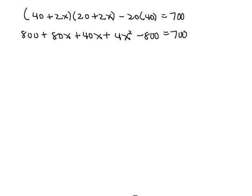Now we can see that the 800s will cancel. If we put the equation into standard form, let's write the 4X squared term first, then the 80X plus 40X will be 120X, then if we bring the 700 to the left-hand side, we have minus 700 equals 0.